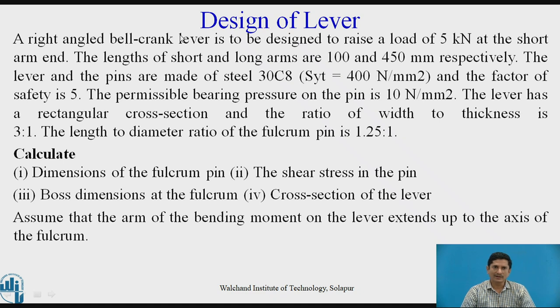A right angle bell crank lever, that means the angle between the two arms is confined to 90 degrees. It is to be designed to raise a load of 5 kN, 5000 N at the short arm end. We know that there are two arm ends for the right angle bell crank lever, one is the short arm and another is a long arm. This load is attached to the short arm end. The lengths of short and long arms are 100 and 450 mm respectively.